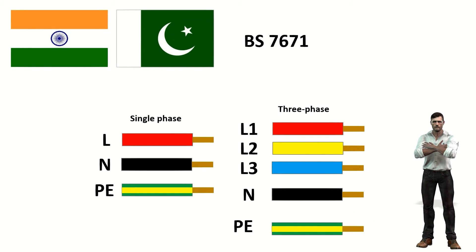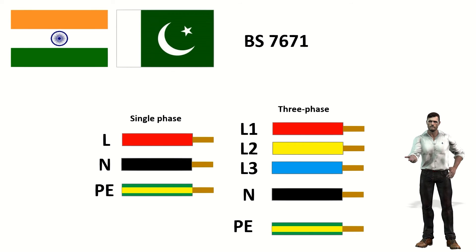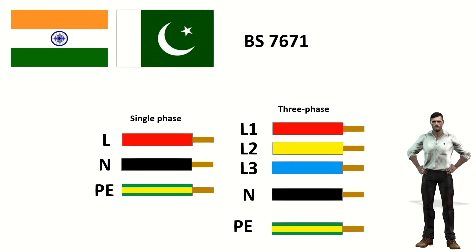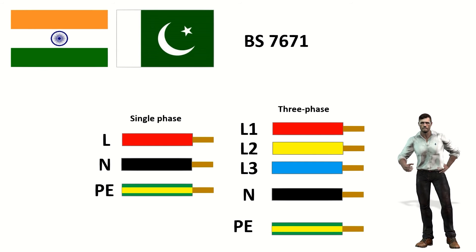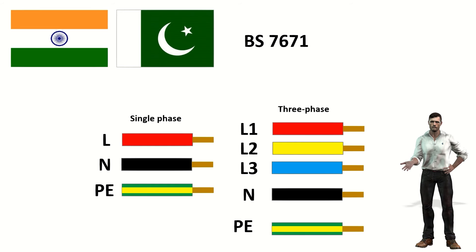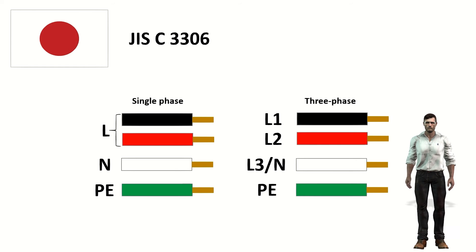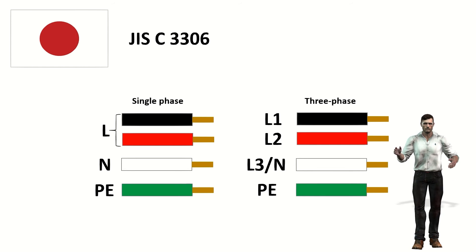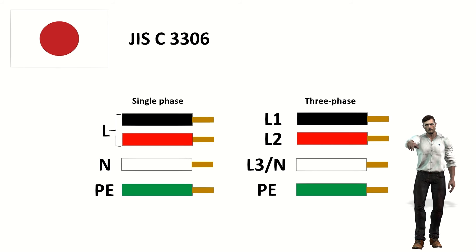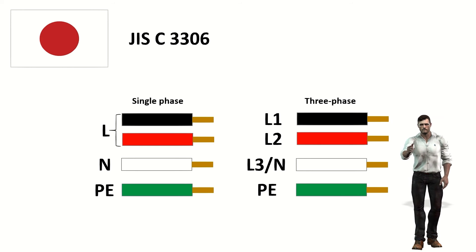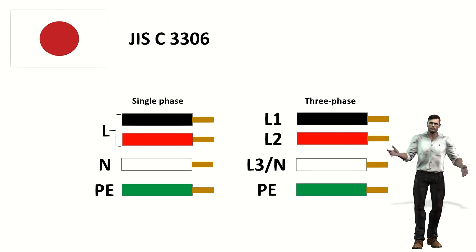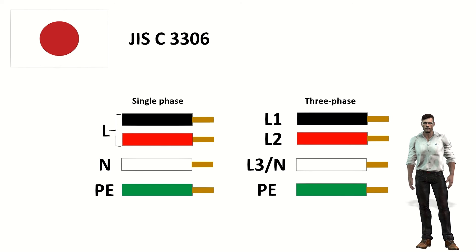Countries like India and Pakistan use the colors red, blue and yellow for the phases, black for the neutral, and green for the protection cable. This color code is in accordance with the BS7671 standard, which was also used in the UK until 2004, when they changed to the IEC standard. In Japan, single-phase systems use black or red for the phase and white for the neutral. The protective earth wire is green. In a three-phase system, for the phase cables L1, L2 and L3, the colors black, red and white are used respectively. White is also used for neutral in a single-phase two-wire system.